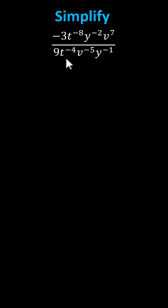To simplify the given expression, because we have a quotient, we use the exponent property: a to the power of m divided by a to the power of n equals a to the power of m minus n.